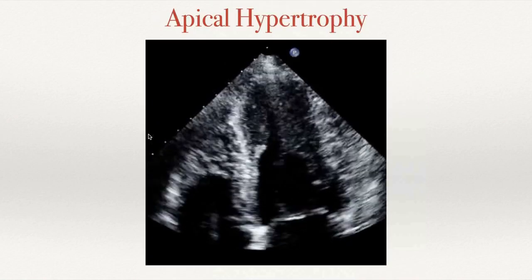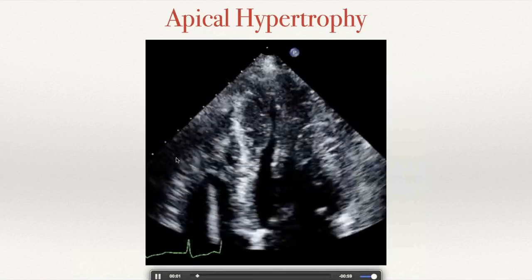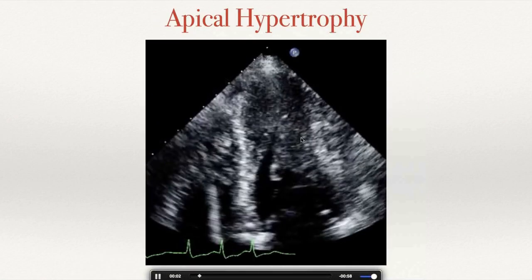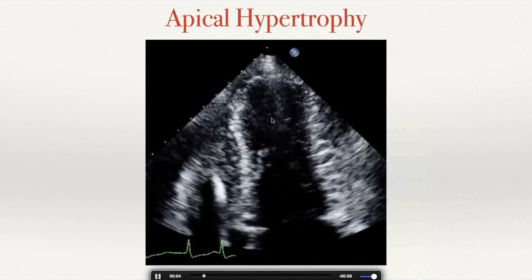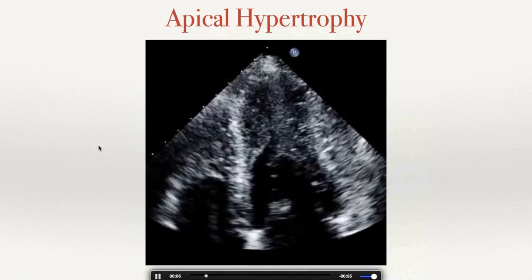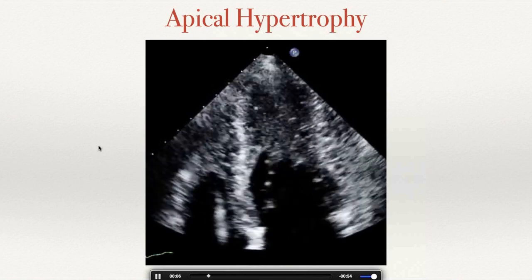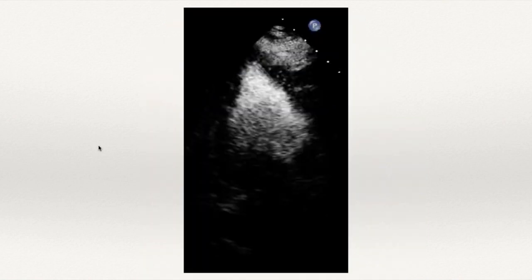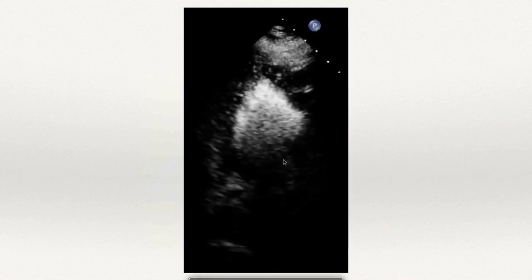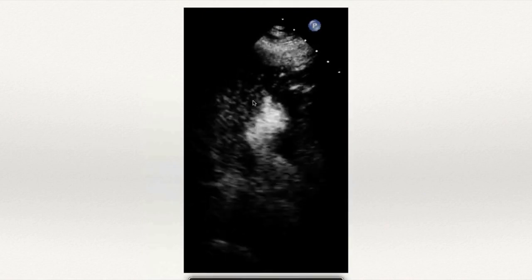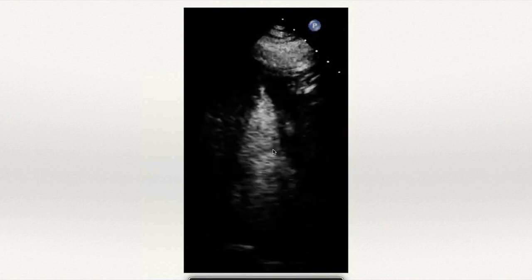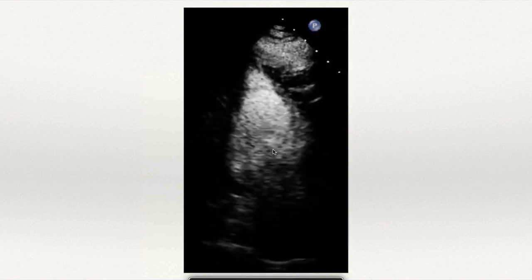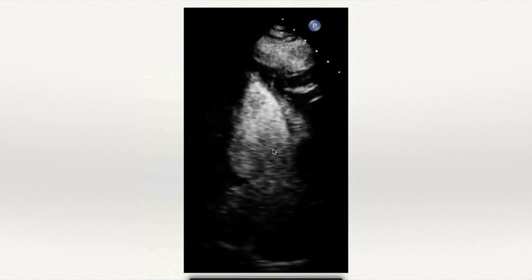This is apical hypertrophy — one of the more obvious cases where you can clearly see the apex is hypertrophied. When you add contrast, you can sometimes have obstruction at the level of the apex, which traps the contrast there and gives you what we call a spade sign.